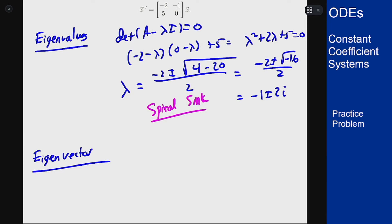I'm going to take the plus version here. The minus one works the same way you can take either one. The matrix then becomes minus two minus negative one plus two i negative one five zero minus negative one plus two i.